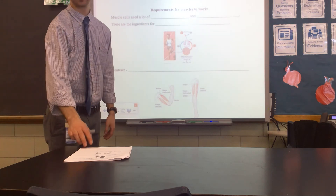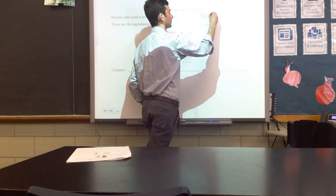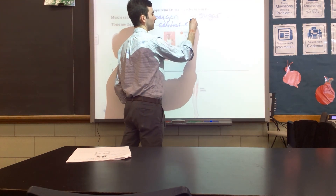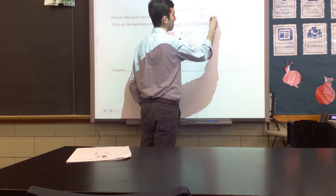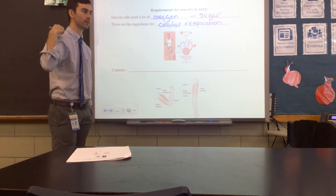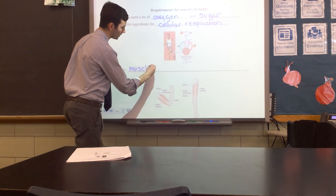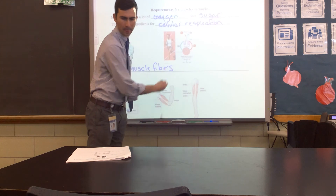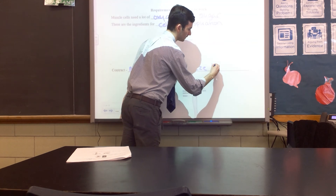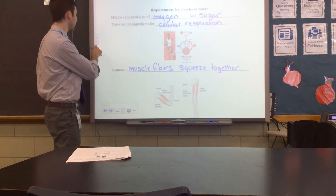Muscles need a few things to work. Muscles need a lot of oxygen and sugar, because these are the ingredients for cellular respiration, which we've talked about. Muscles do two things: they contract and they relax. When they contract, muscle fibers squeeze together. When muscles relax, those muscle fibers lengthen.